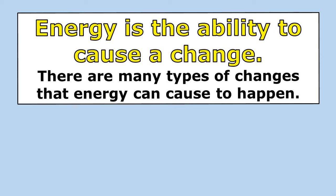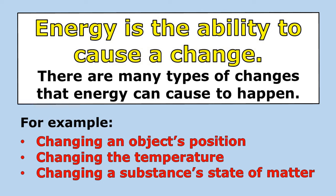Energy is the ability to cause a change, and there are many types of changes that energy can cause to happen. For example, changing an object's position, changing the temperature, changing a substance's state of matter — these are all changes, and changes require energy.